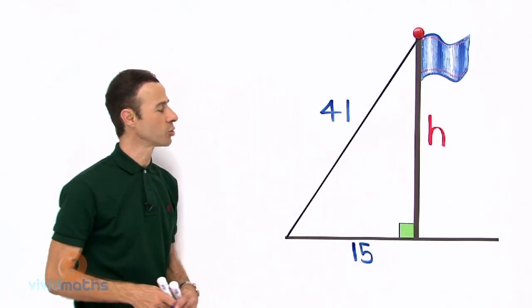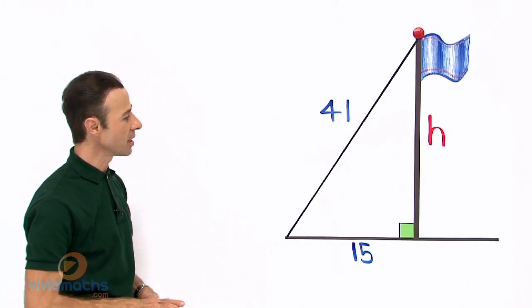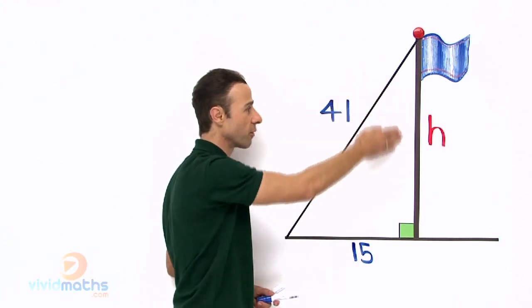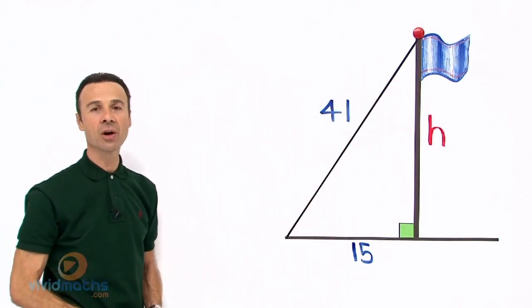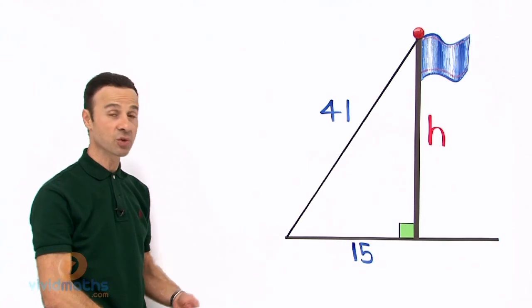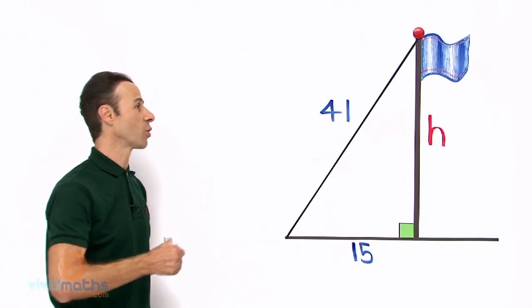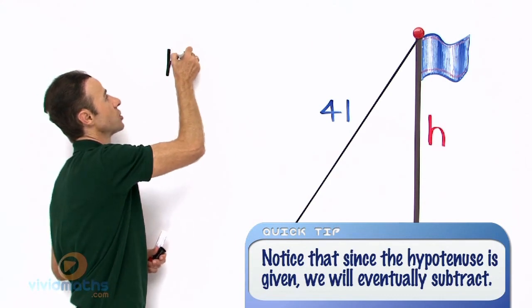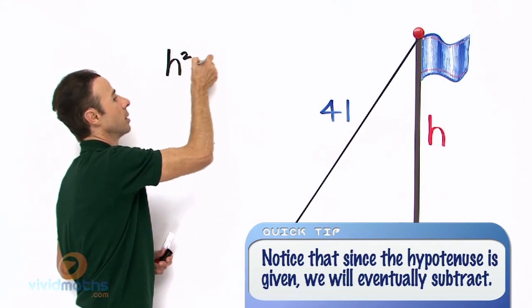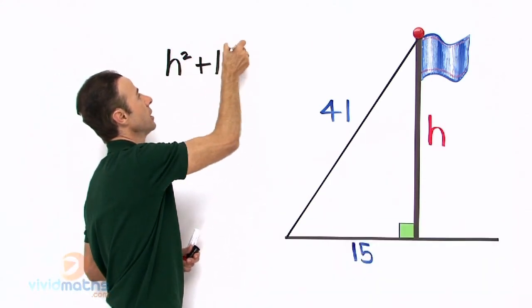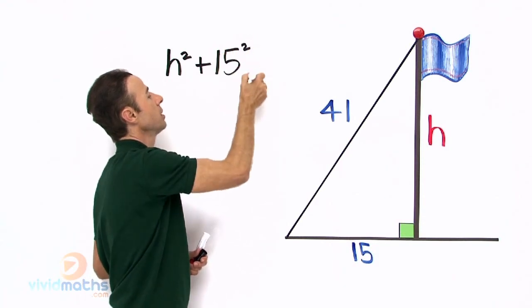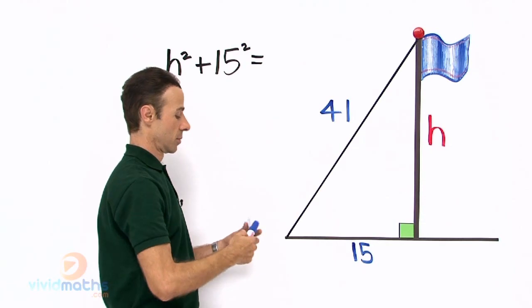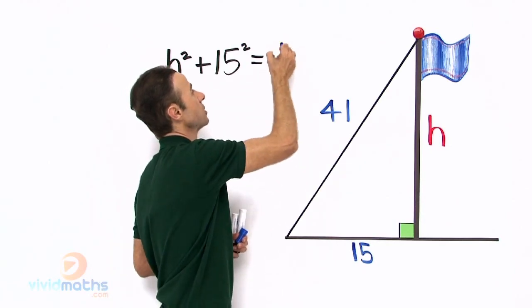Okay, we have labeled the diagram, we can look at it now. Yes, we have the hypotenuse, we have one of the lengths, we are looking for the height. So what we do now is put it into the equation. Let us write up the equation first, and the equation will be H squared plus 15 squared equals 41 squared.